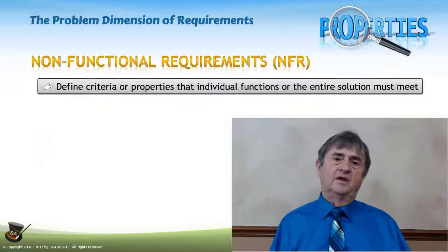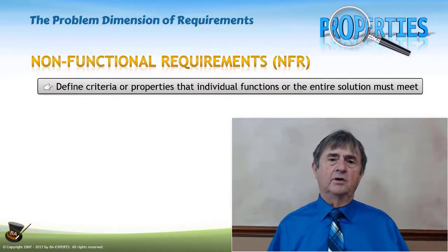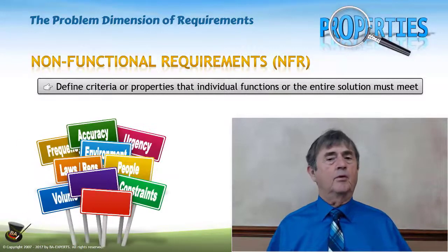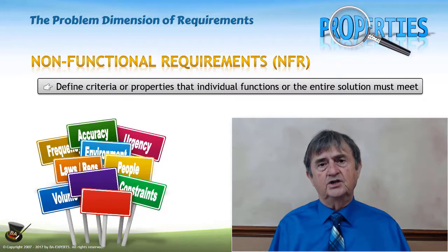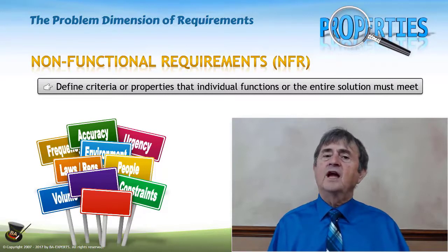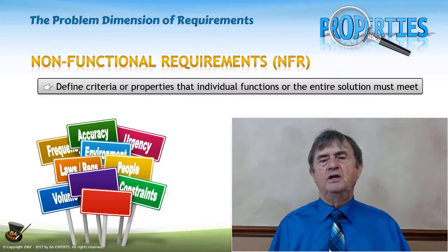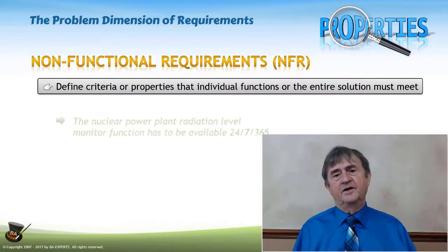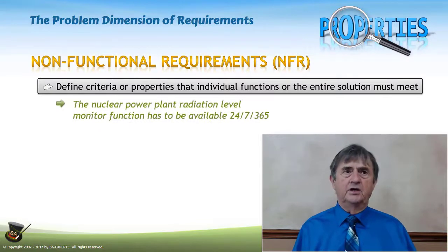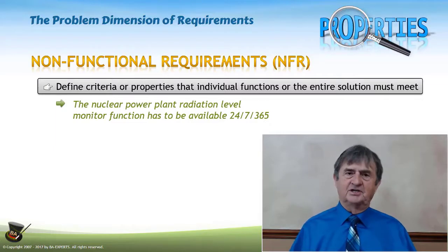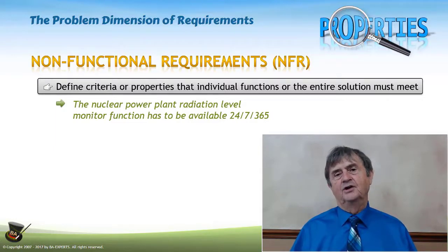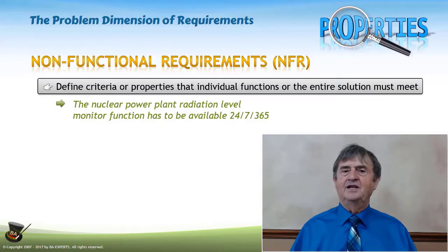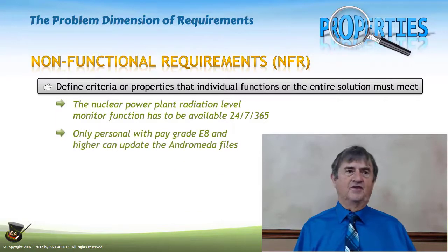What are non-functional requirements? Fundamentally, a non-functional requirement defines criteria, properties, or conditions that the individual functions of an application — or the application as a whole — have to meet in order for the application to be satisfactory and to meet the business need. An example: the Nuclear Power Plant Radiation Level Monitor function has to be available 24/7, 365 days — implying it's an important function measuring radioactivity in a nuclear power plant, so we'd like to make sure it doesn't fail.